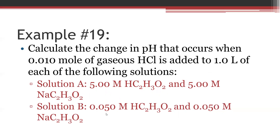We want to calculate the change in pH that occurs when 0.01 mole of gaseous hydrochloric acid, HCl, is added to one liter of each of two solutions. Solution A has 5 molar acetic acid and 5 molar sodium acetate. Solution B has 0.05 molar concentrations for both components of the buffered solution. This time we're adding an acid instead of a base, so the reaction equation is slightly different.